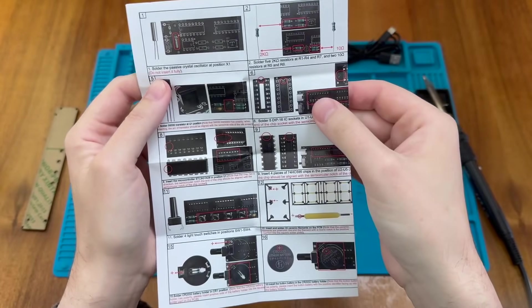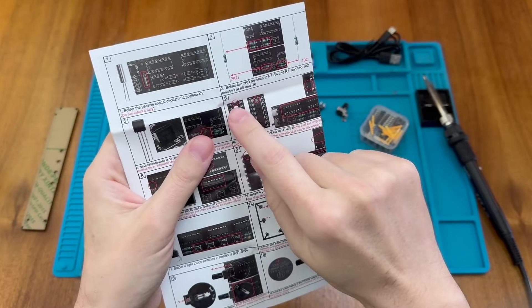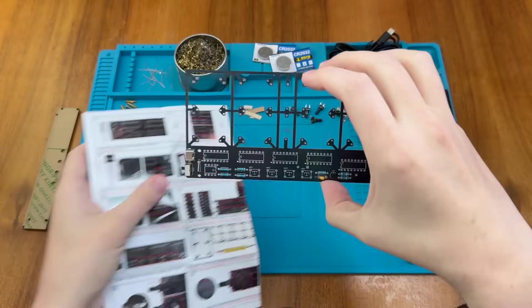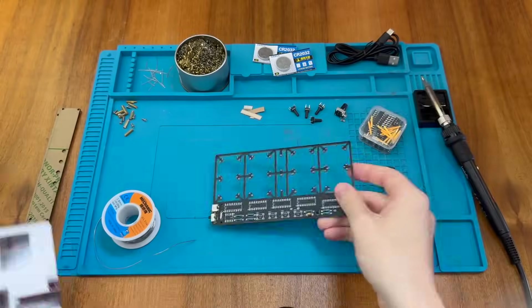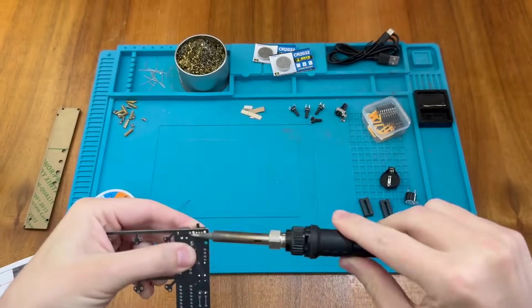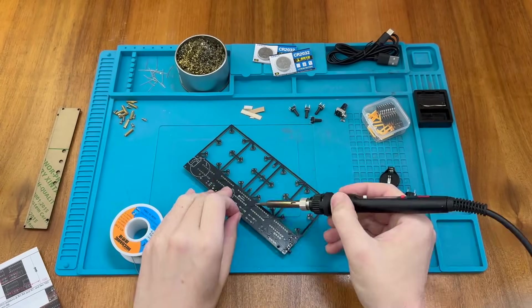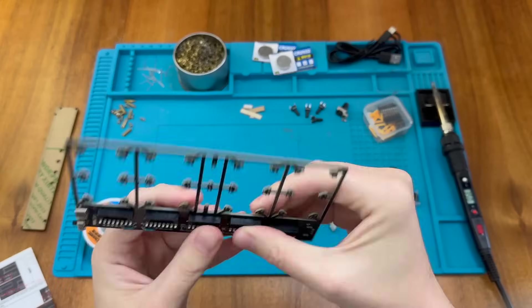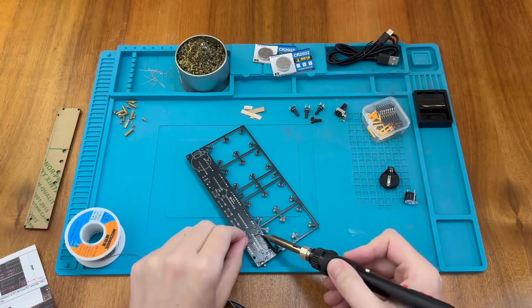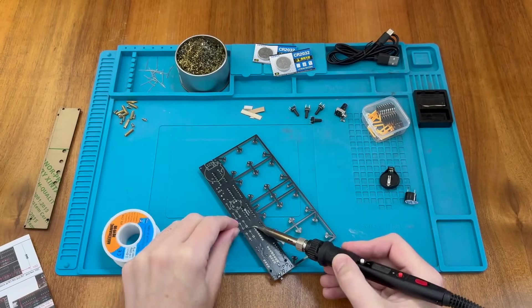Next we have to put in some DIP16 IC sockets in U1 to U5 and it points out we need to make sure the little notch is aligned with the notch on the silkscreen and so those just go along here one two three four five and these are all provided in our little box.